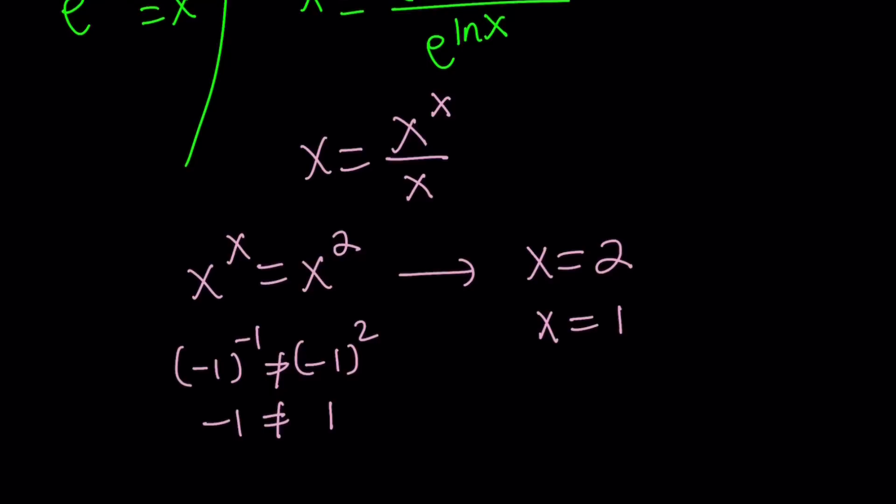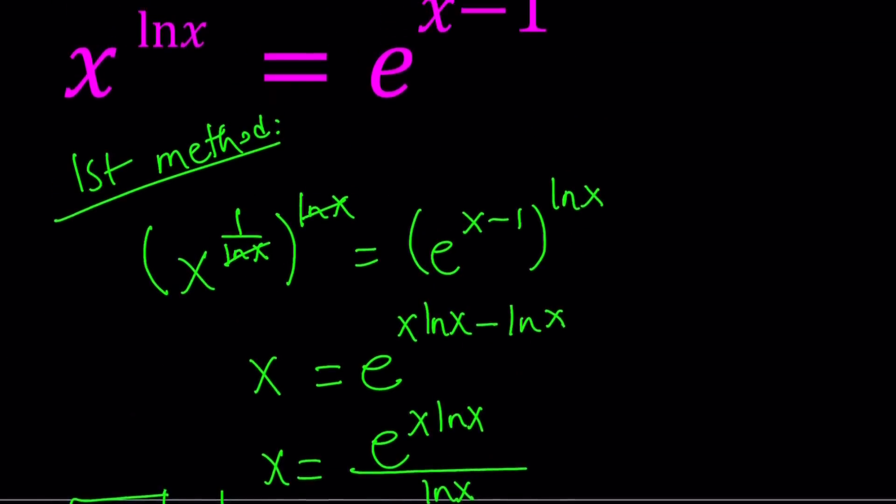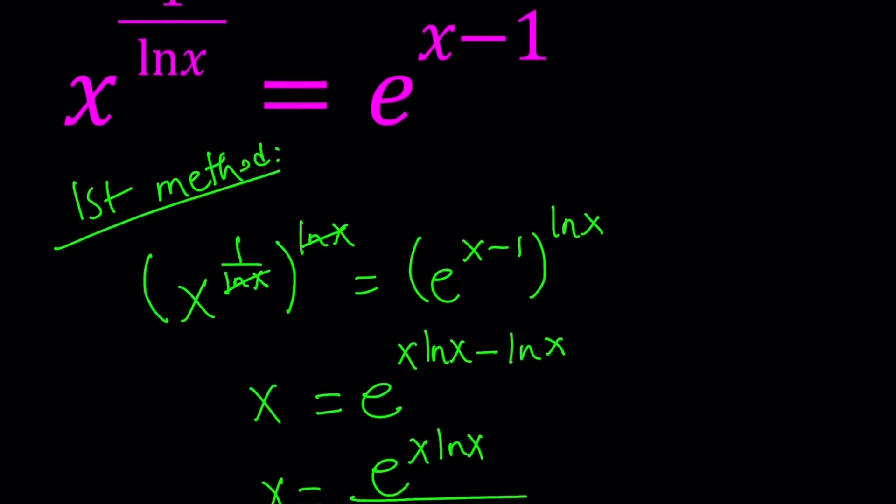But we had to check that. So it looks like I got two solutions and my domain said x is greater than 0, right? So everything looks good, except for the fact that at the very beginning, in our original equation, we had 1 over ln x.